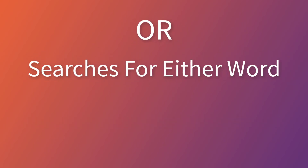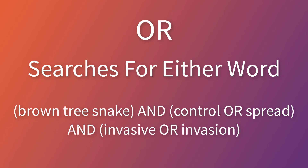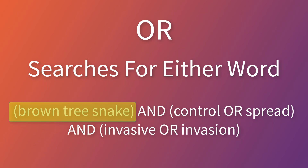OR is used to add synonyms and alternate terms to a search. Here I should also mention parentheses. Parentheses can be used to organize different segments of your search query — for example, to organize the multiple words of brown tree snake as a single concept. They are also used to organize OR statements. So our search with OR statements would be: brown tree snake AND control OR spread AND invasive OR invasion.